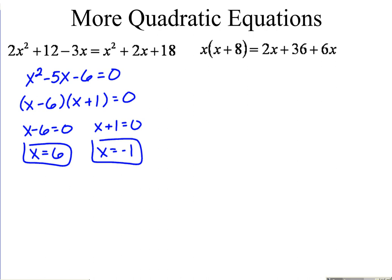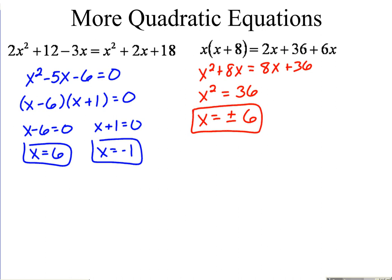Last problem: distribute x and combine like terms — 2x plus 6x. It's quadratic, so get everything on one side set equal to zero. When we subtract the 8x over, that cancels, leaving x squared equals 36. To solve for x, take the square root of both sides — remembering to include plus or minus — giving x equals plus or minus 6.